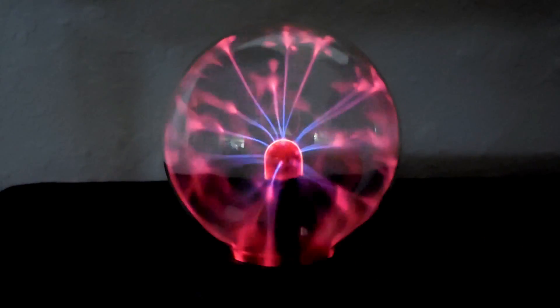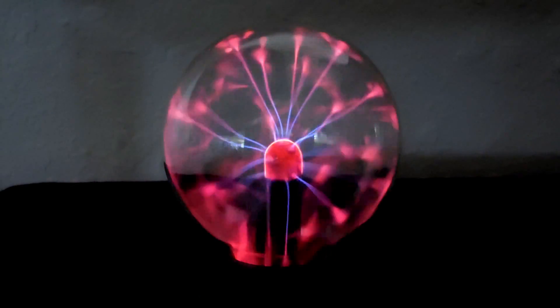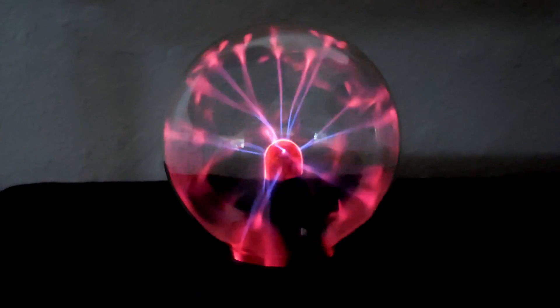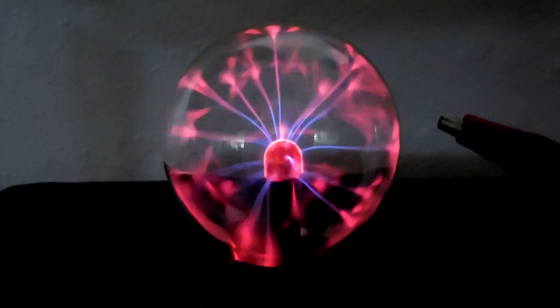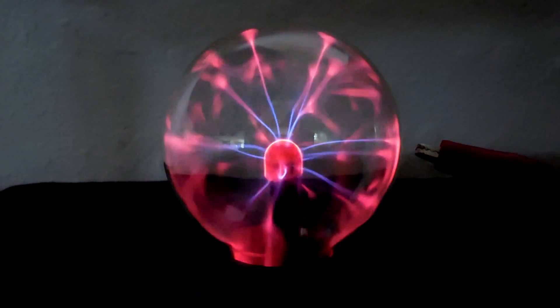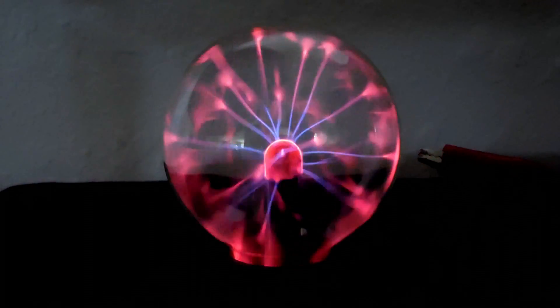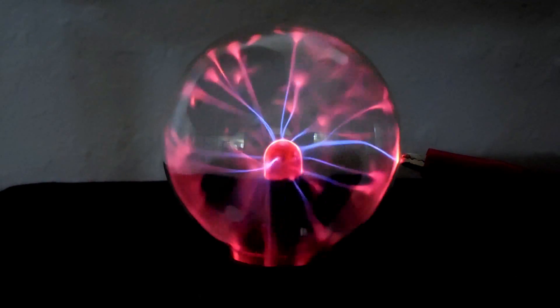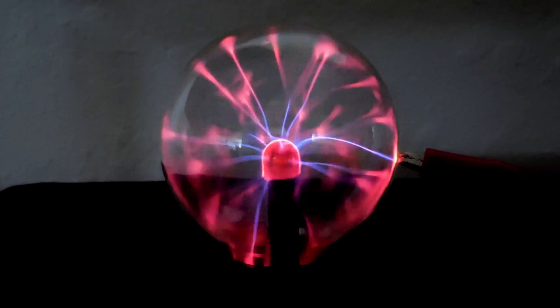Okay, my alligator clip is grounded to a cold water pipe. Let me hold it very close. You can see it being attracted to it. Let me go right against the glass. Now I'm going to pull away very easy.